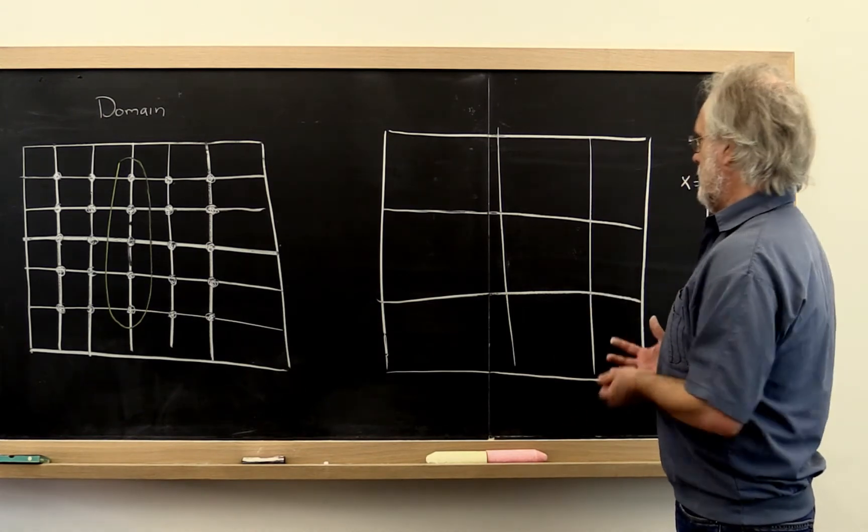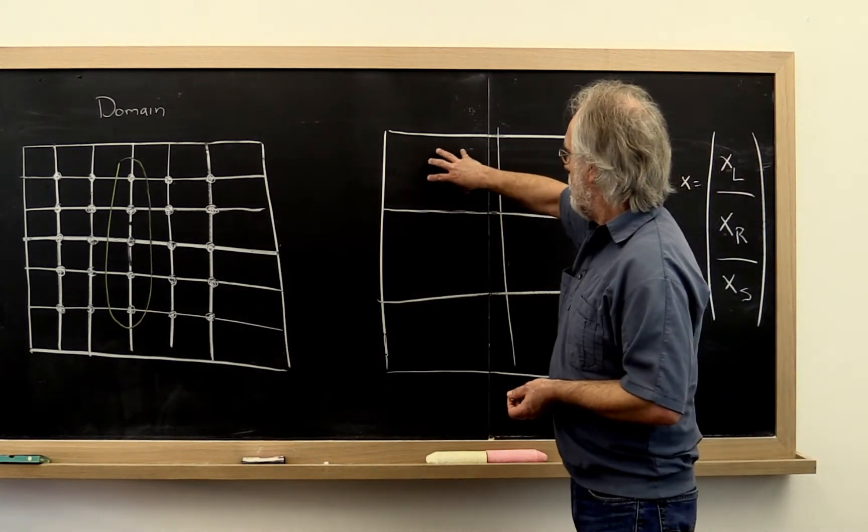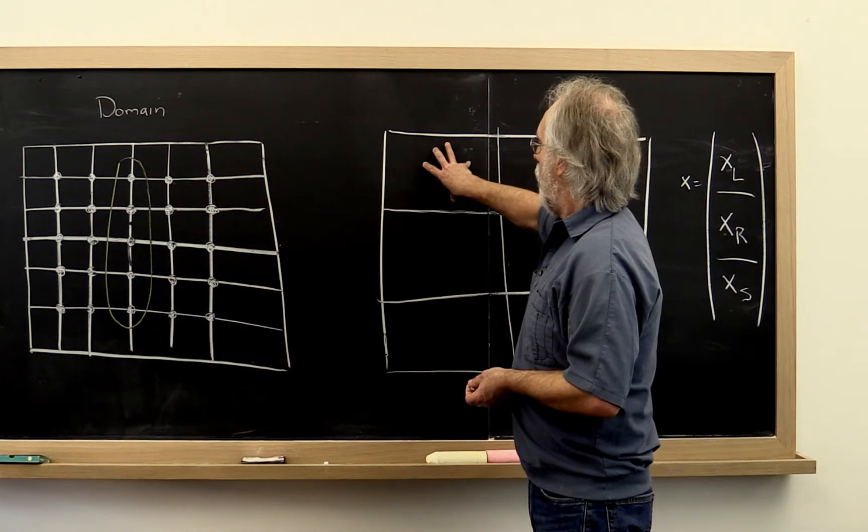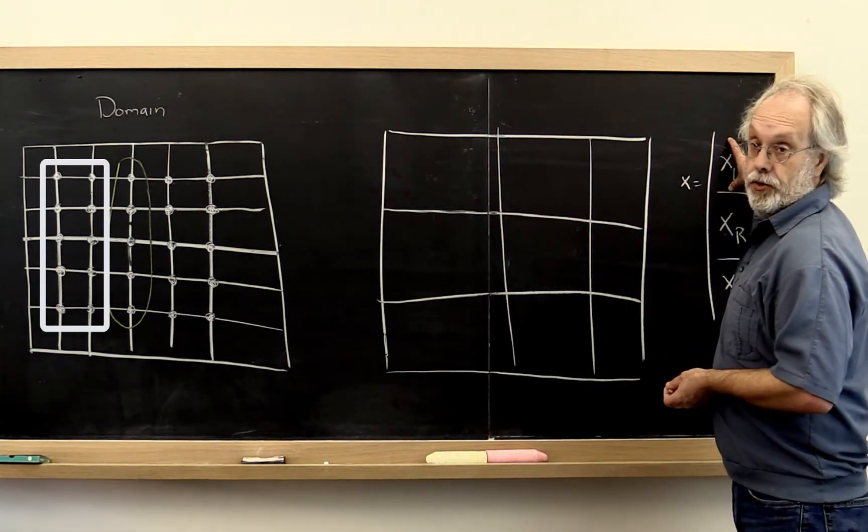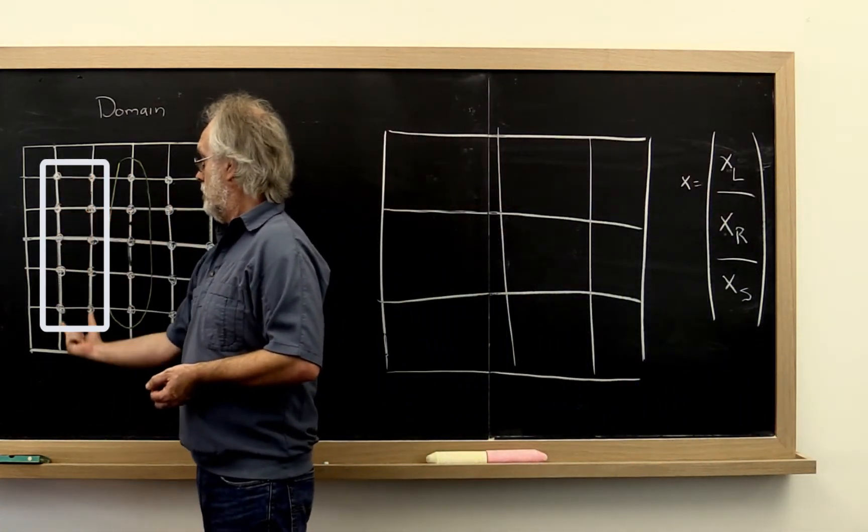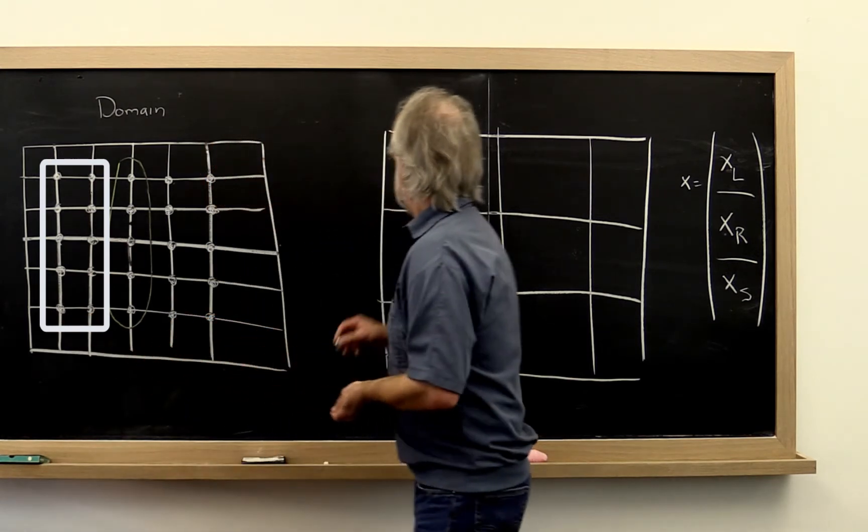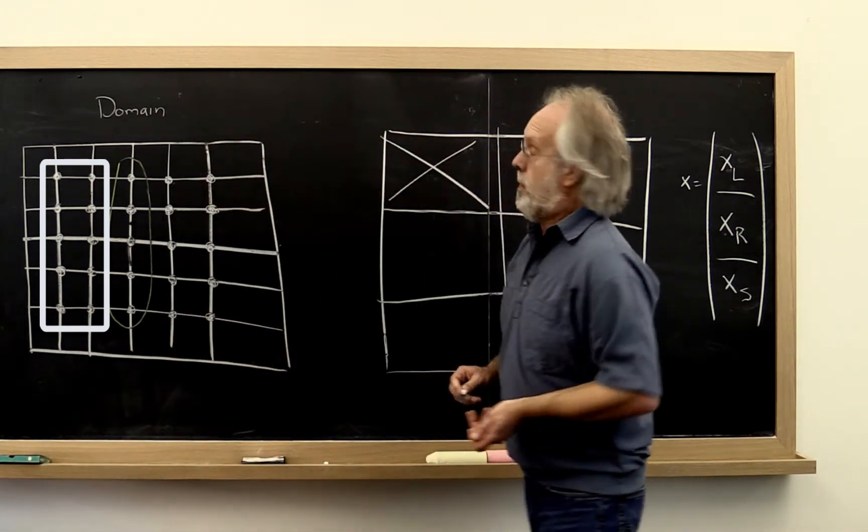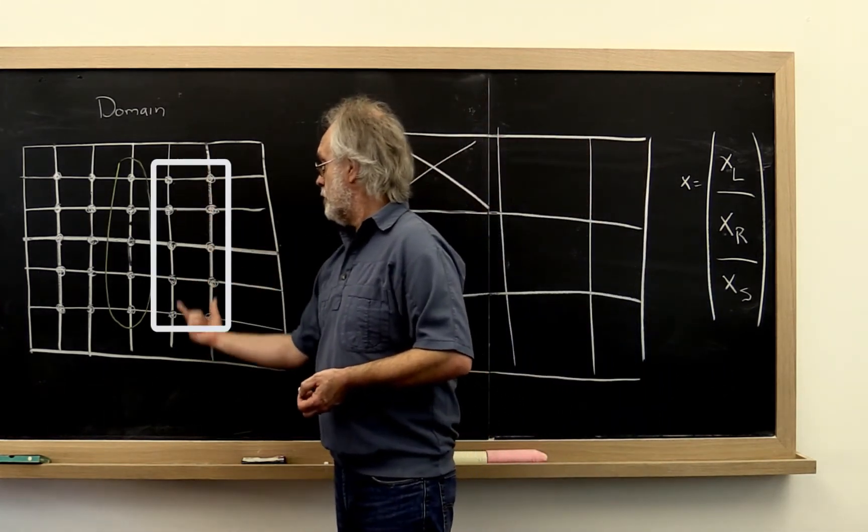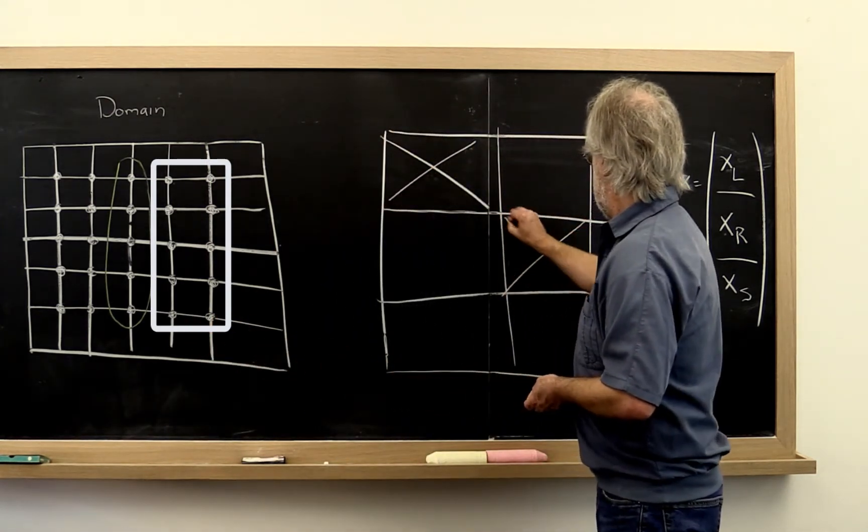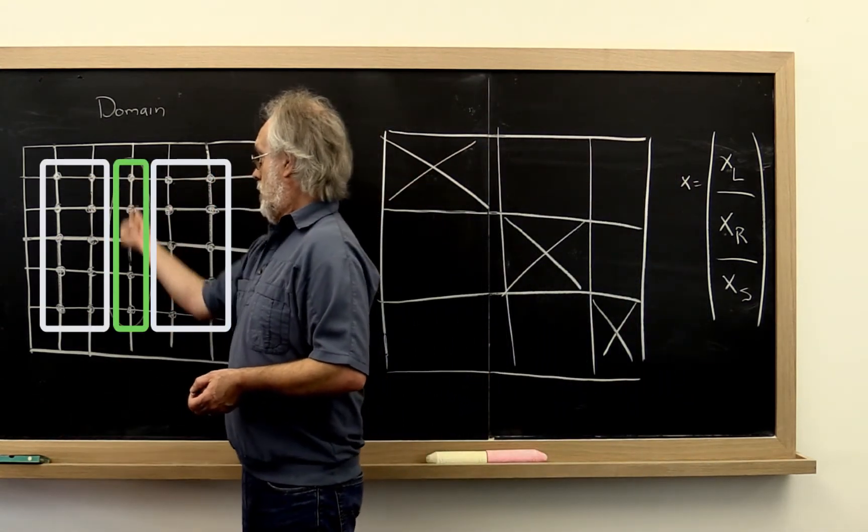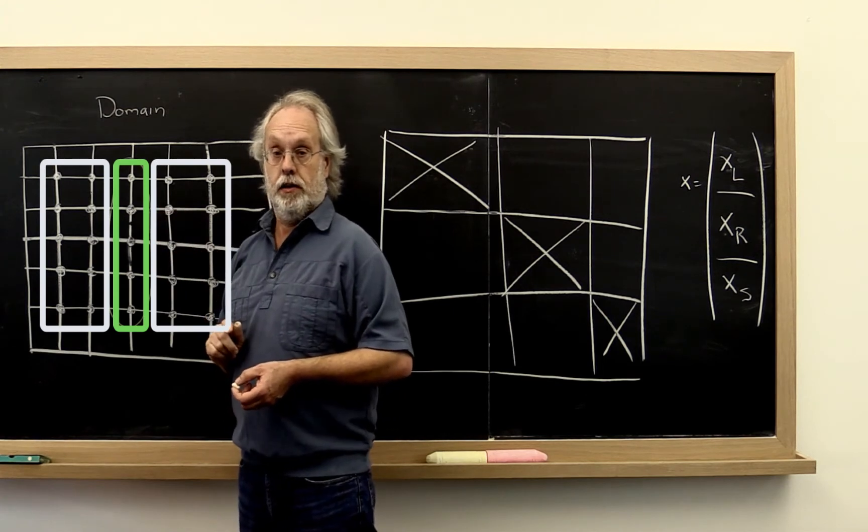Well, what that translates to is that this block of our matrix that corresponds to this right here only captures how those values are connected to themselves. Now there's some sort of connection here. So there is some sort of non-zero pattern in that sub matrix. Similarly, there's some sort of non-zero pattern in this sub matrix and in this sub matrix because within each sub domain there are connections between the mesh points.